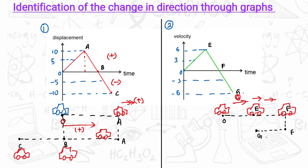From O to E there is acceleration, and from E to F there is deceleration. At F, the velocity becomes 0. After F, from F to G, the velocity is negative, so it will move in the opposite direction — this is the vector positive direction, and the object moves in the opposite direction from F to G. So in displacement-time graphs, the object changes motion direction at points like A.